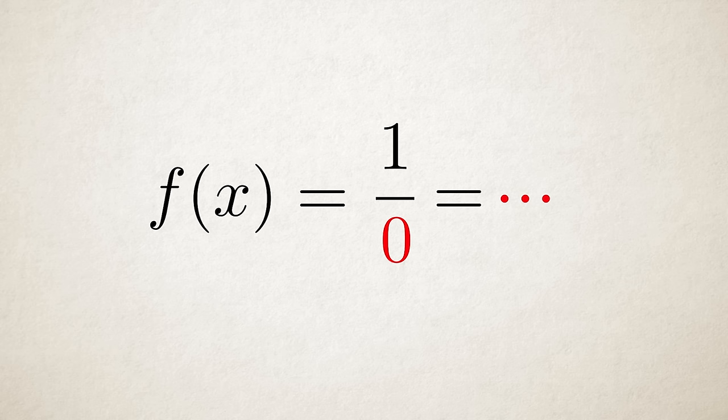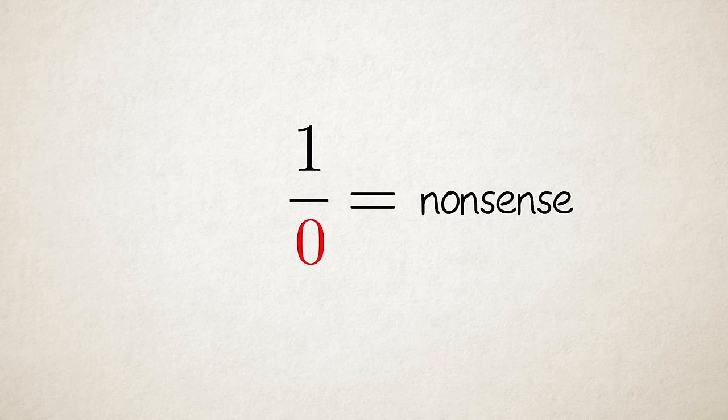Substitute and... The function has no solution because it doesn't make any sense. Because 1 divided by 0 doesn't make any sense.